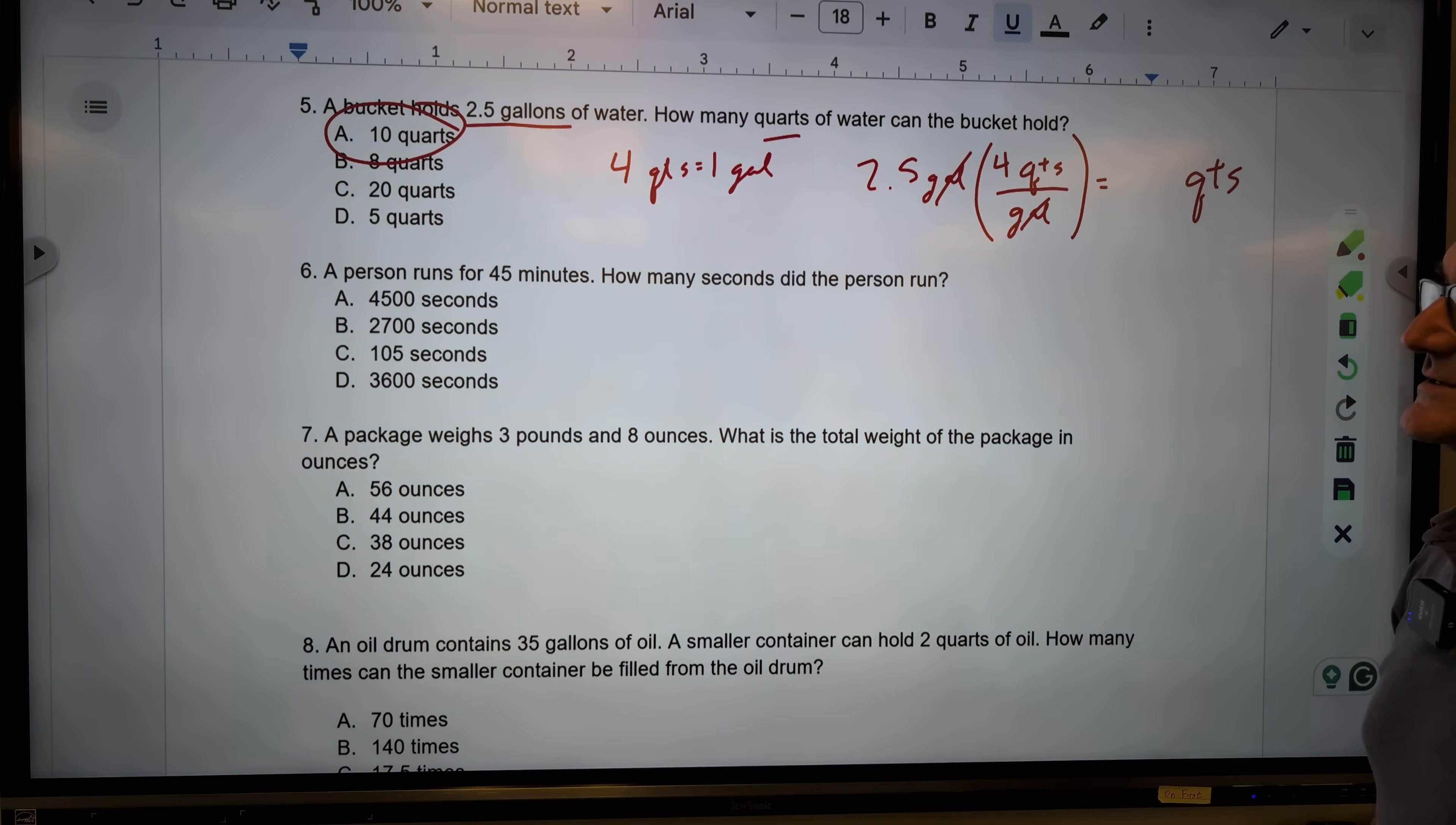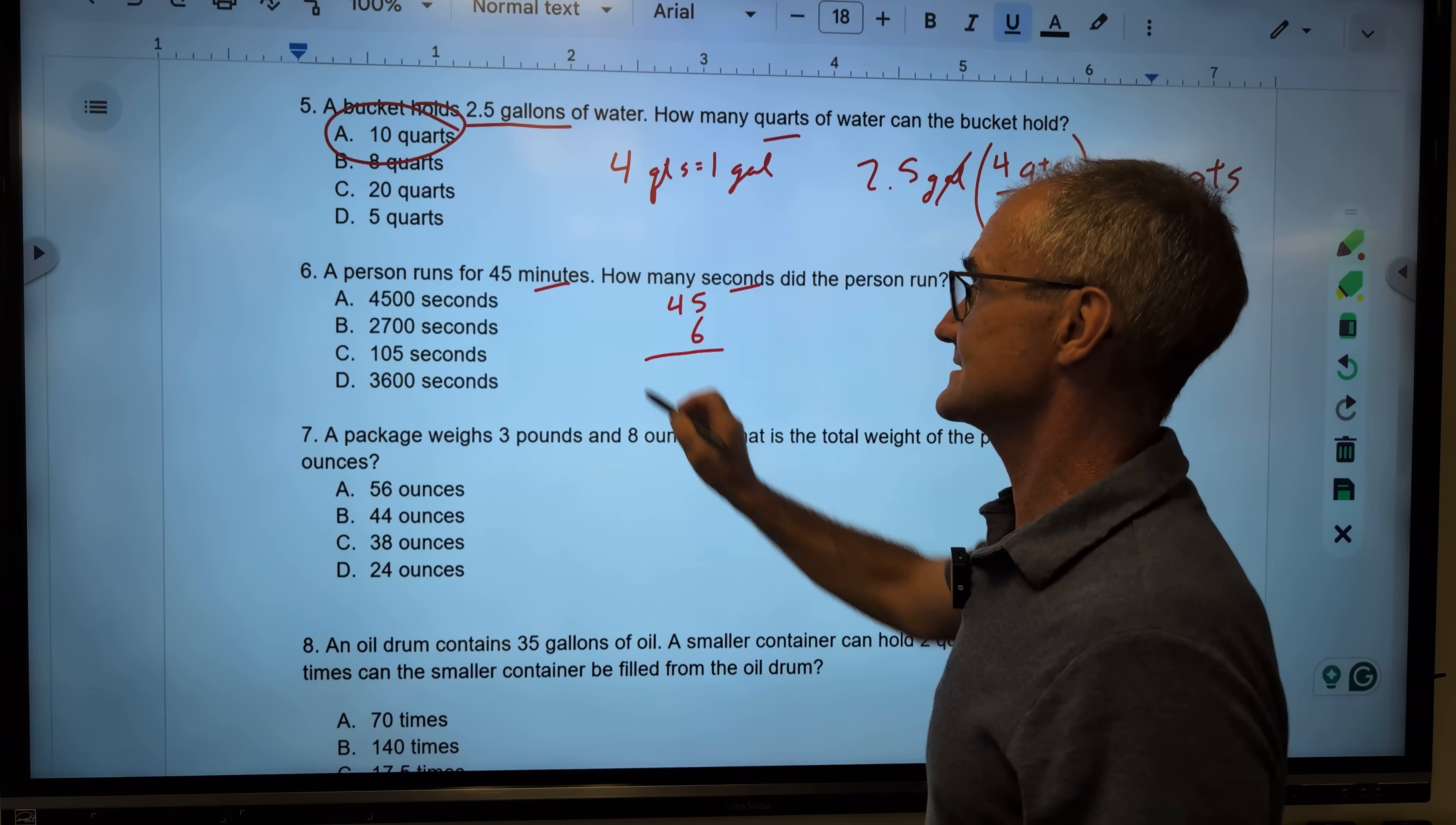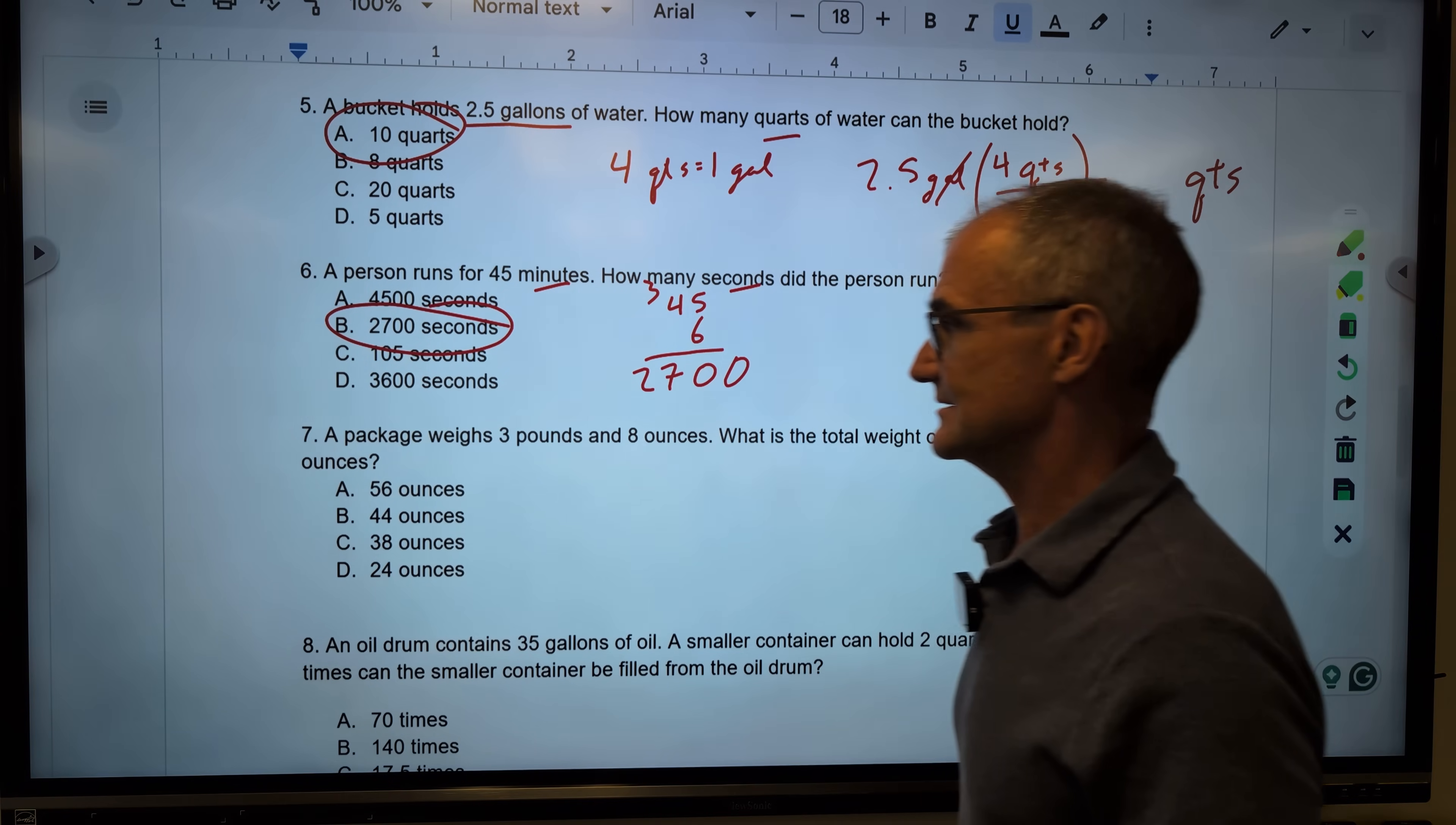Here's a time conversion here on number six. I have 45 minutes and I want seconds. This isn't an imperial system. This is just time. So I'm going to multiply by 60, 60 seconds to the minute. So I'm just going to multiply by six and then when I'm done add a zero. Six times five is 30. Carry the three. Twenty-four plus three, twenty-seven. Don't forget that zero. A person runs 45 minutes. How many seconds? Twenty-seven hundred seconds. Correct answer. Answer B.